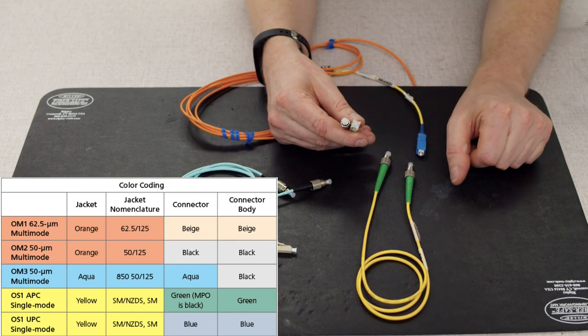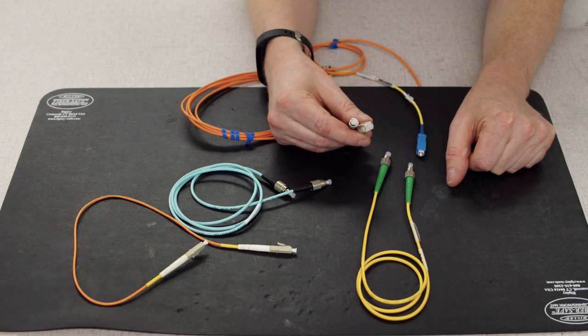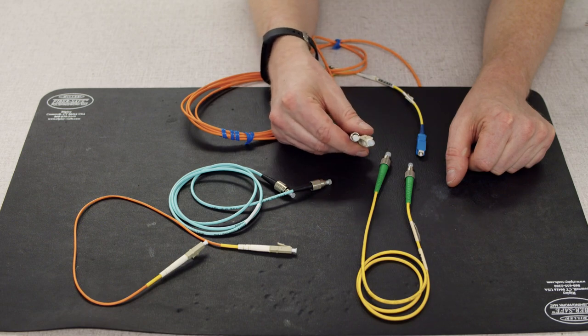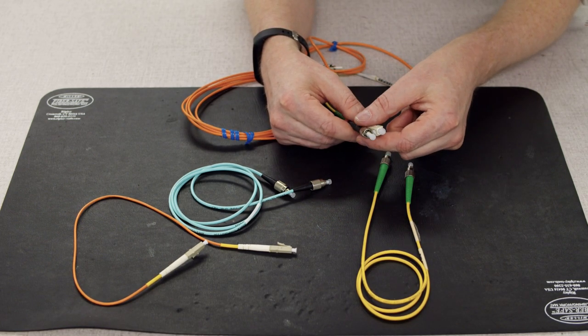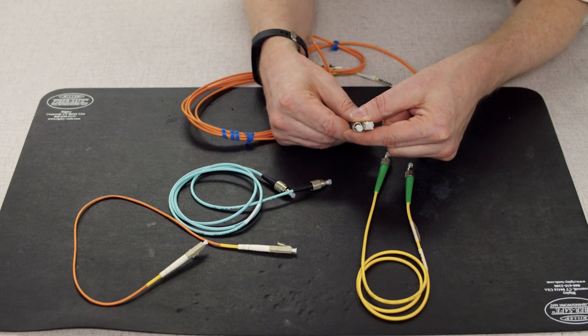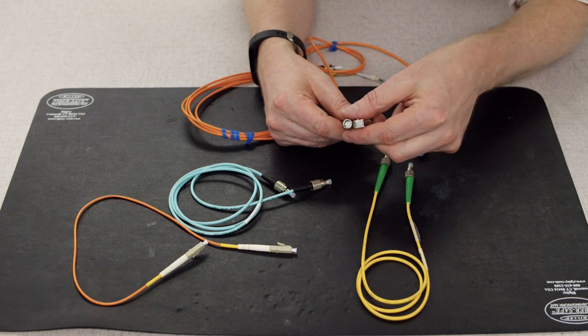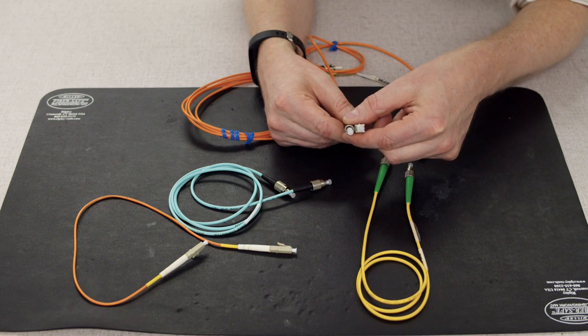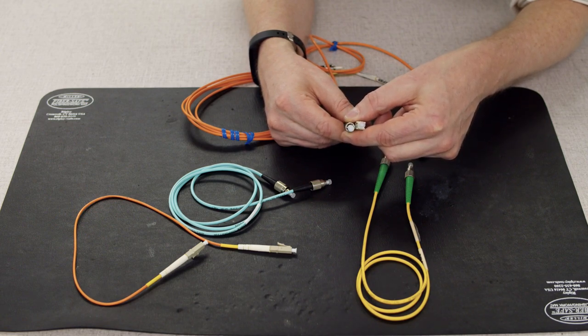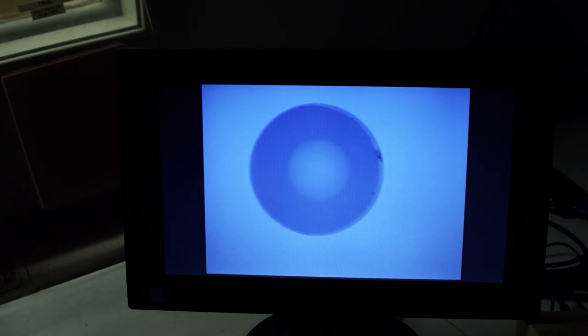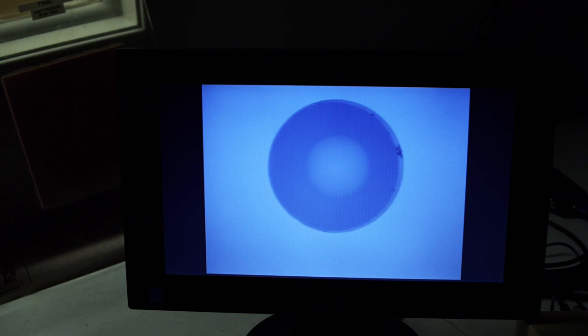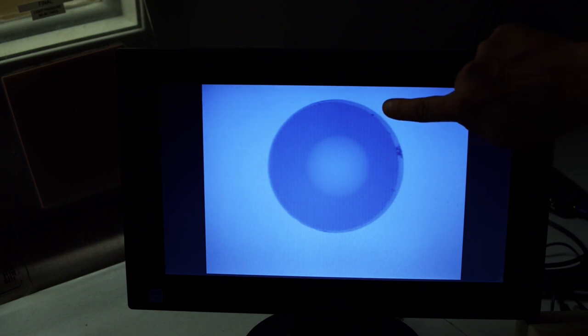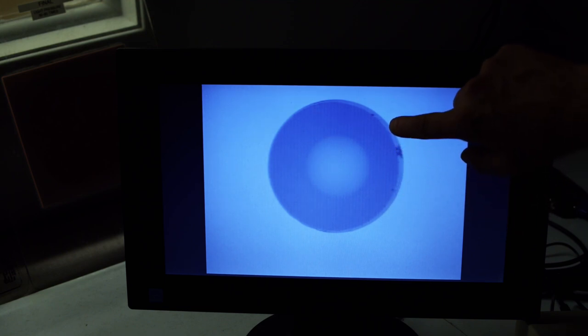And there's actually a set order for which these go so usually if they're going into a connector they will follow a set color code. Now in order to let the person who's using them know that say these are single mode, a giveaway is usually they make this 900 micron buffer yellow. So if these were multi-mode they would probably make them orange. With that said even the connector bodies and boot colors mean something.